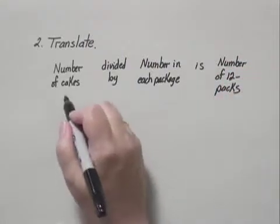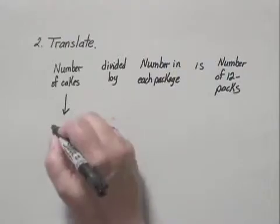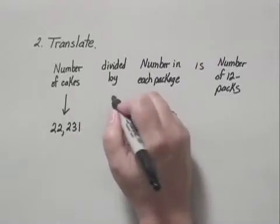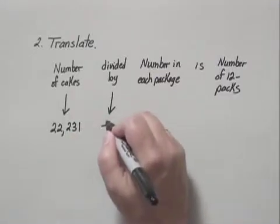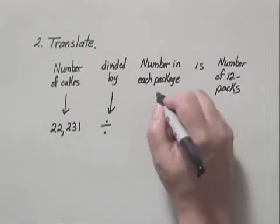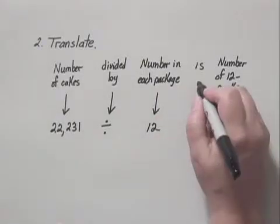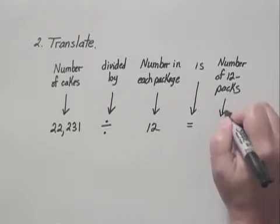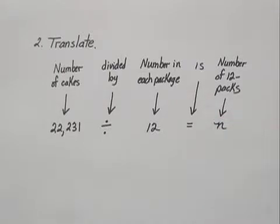So to translate: the number of cakes, 22,231, divided by the number in each package, 12, equals the number of 12-packs, n. So we have an equation that we can solve.